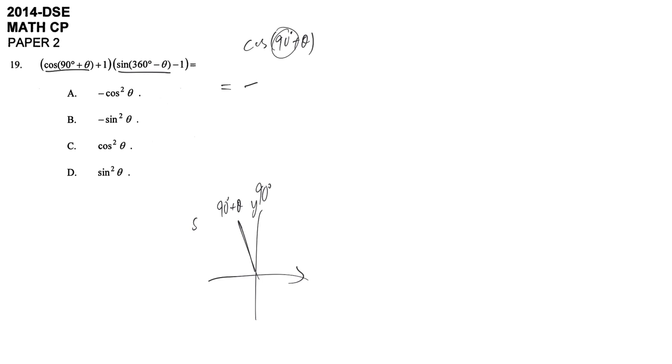And then after that, sine 360 degree minus theta. So this is 360 degree minus theta, which is related to x-axis, so you don't need to change the format. It's still sine theta, but the problem is it's at the region of cosine, so this will become negative.